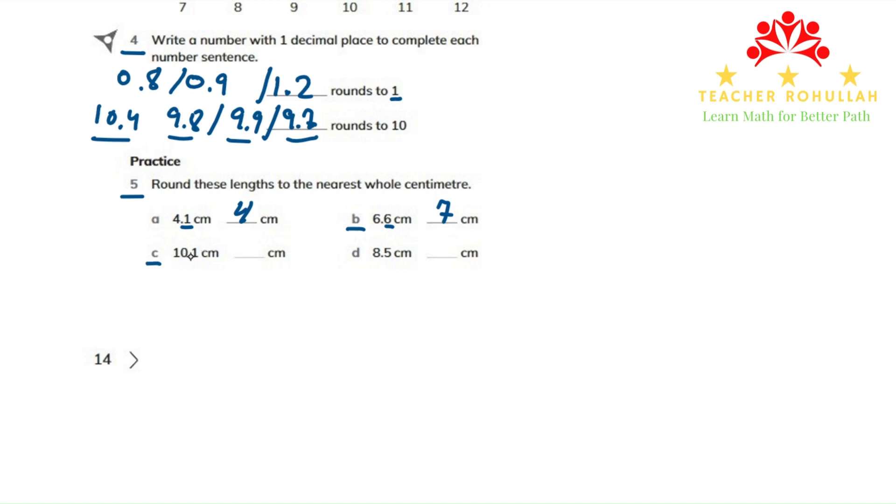In part C, 10.1 rounds to 10 because the digit in the tenths place is one, which is four or less.